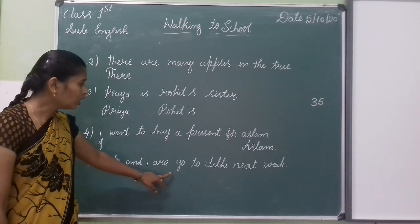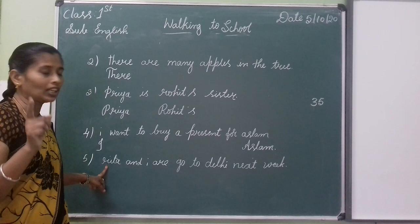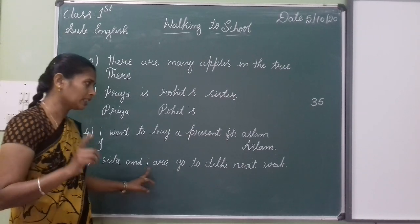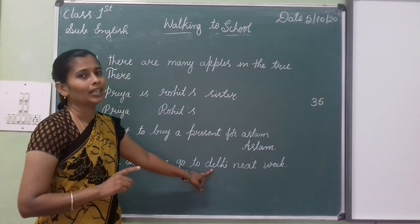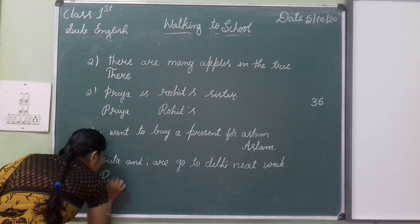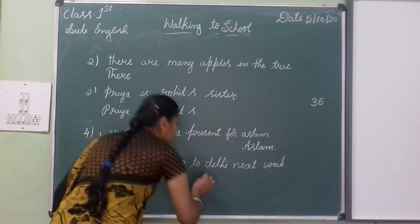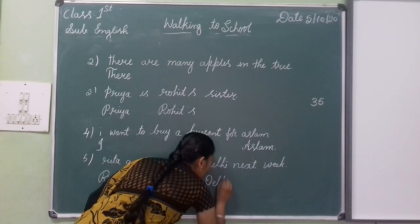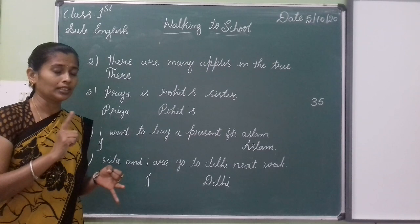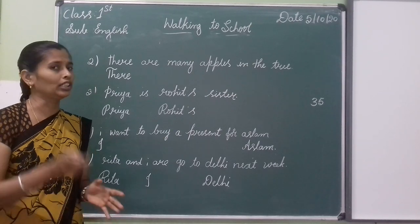Rita and I are going to Delhi next week. In this sentence, Rita is a noun — name of a person. I should also be written as capital I. Delhi is a name of a place, so here we have to write capital letters. So Rita, I, and Delhi all need capital letters. When it is a person's name, place name, days, and months, you write capital letters, not small letters.